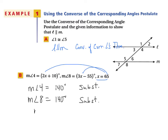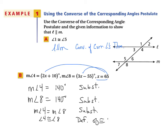We can now say the measure of angle 4 equals the measure of angle 8 by substitution — or also by the transitive property of equality. Then we know angle 4 is congruent to angle 8 by the definition of congruent angles. Therefore, line L is parallel to line M because of the converse of the corresponding angles theorem.